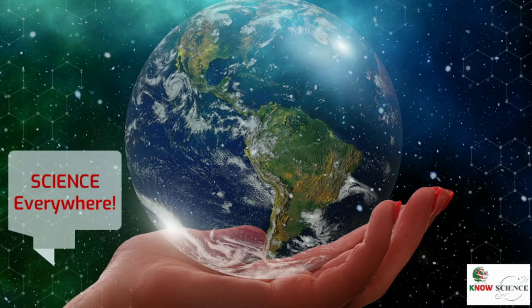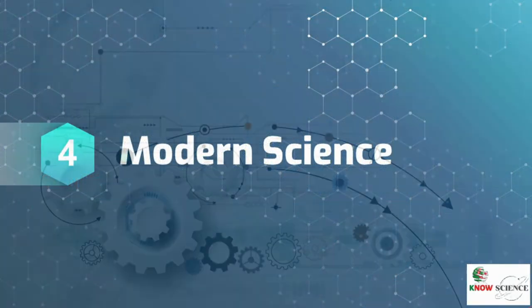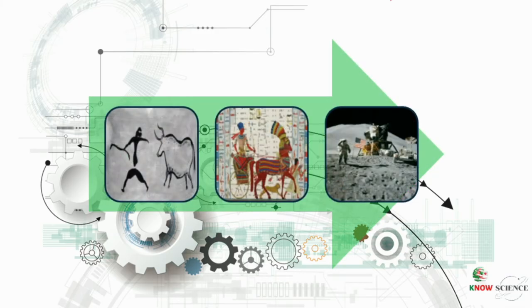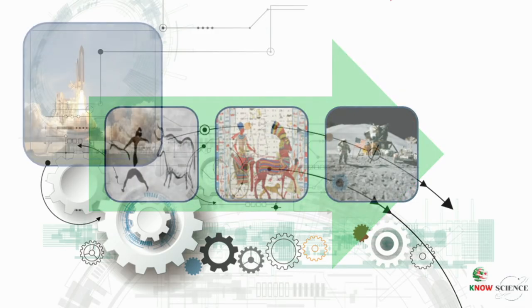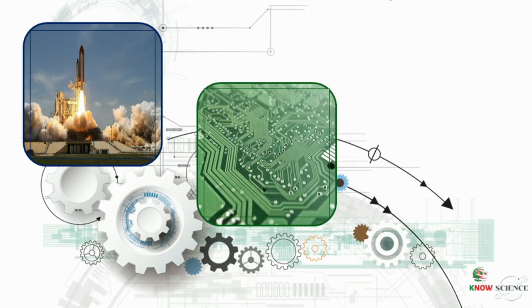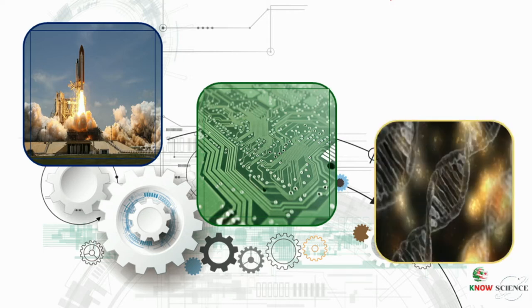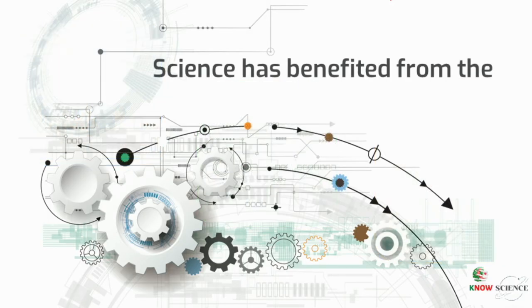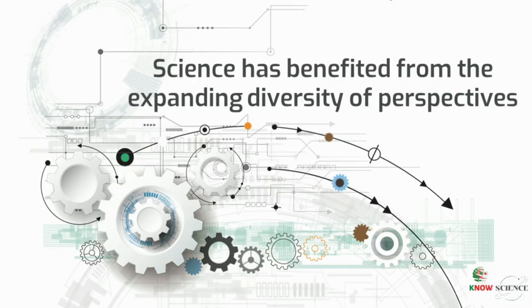Science is everywhere and is one of the most important objects of study in our world. Modern science has evolved with human history and has come a long way in the last 200 years. As our scientific knowledge has advanced and the questions we seek to answer have become more complex, science has become more specialized. We now have more powerful data analysis techniques and more sophisticated equipment for making observations and running experiments.